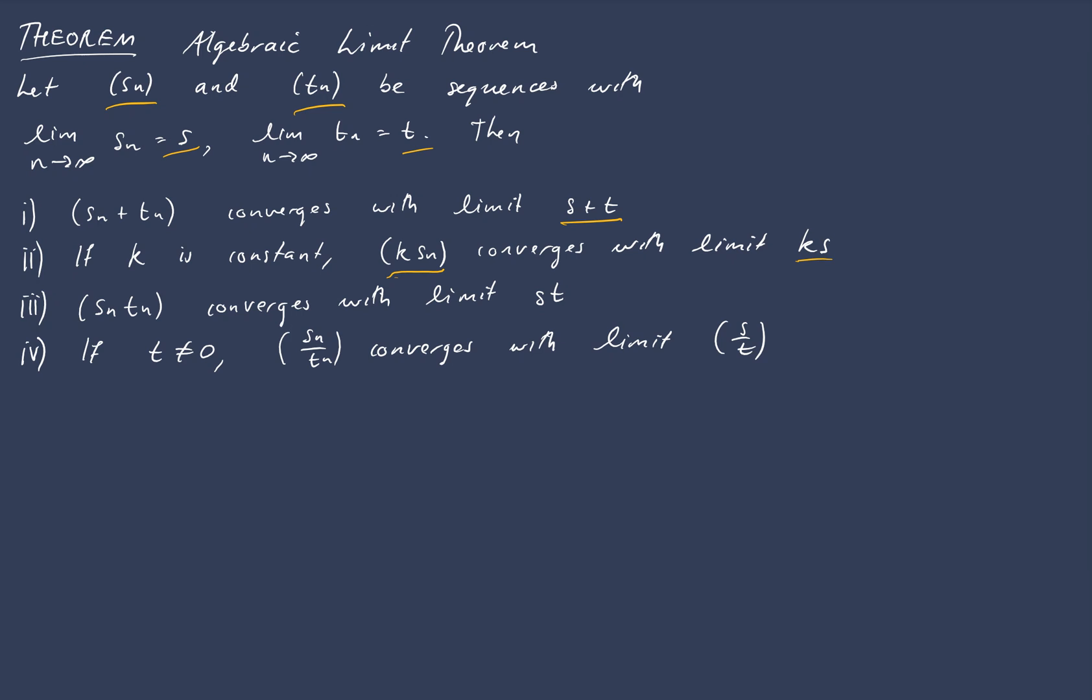Products work maybe slightly less obvious. If we take products pairwise then the sequence converges with limit S times T and quotients also converge with limit S over T with the caveat that T, the sequence Tn, cannot be converging to zero otherwise our sequence will not converge.